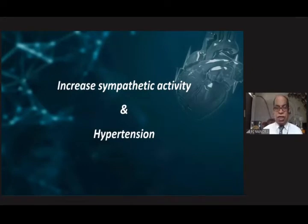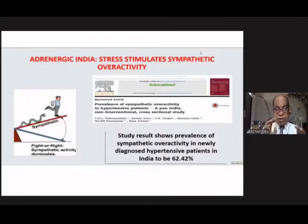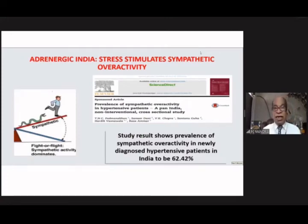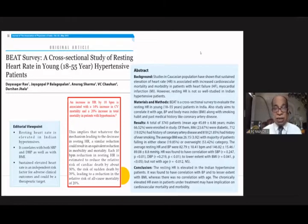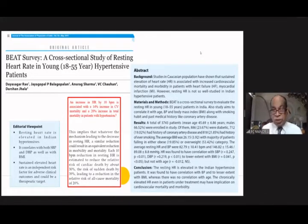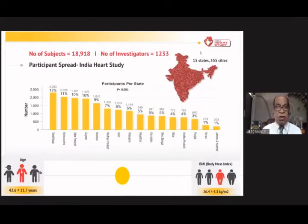The second issue being increasingly recognized is increased sympathetic activity and its relation to hypertension. Indians are hypersympathetic — the prevalence of sympathetic overactivity in newly diagnosed hypertension is 62 percent. Data from the WEED survey showed resting heart rate is elevated in Indian hypertensives, correlating with both systolic and diastolic pressure. Sustained elevated heart rate is an independent risk factor: an increase of 10 beats per minute is associated with 14% increase in cardiovascular mortality and 20% increase in total mortality in hypertensive patients.